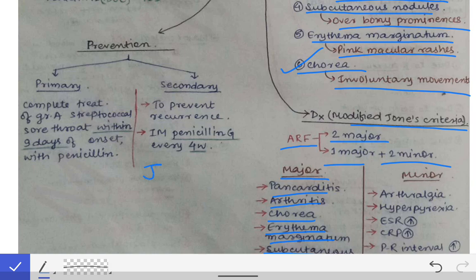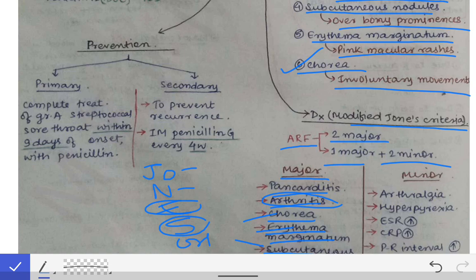A helpful mnemonic to remember the major criteria uses the name 'JONES': J-O stands for Joints (arthritis), N stands for Nodules (subcutaneous nodules), E stands for Erythema marginatum, S stands for Sydenham's chorea, and C in 'criteria' stands for Carditis (pancarditis).